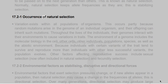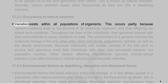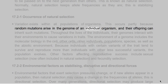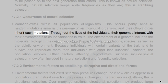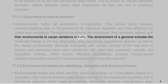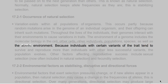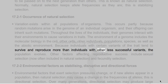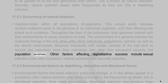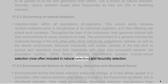Variation exists within all populations of organisms. This occurs partly because random mutations arise in the genome of an individual organism, and their offspring can inherit such mutations. Throughout the lives of individuals, their genomes interact with their environments to cause variations in traits. The environment includes molecular biology in the cell, other cells, other individuals, populations, species, and the abiotic environment. Because individuals with certain variants of the trait tend to survive and reproduce more, the population evolves. Other factors affecting reproductive success include sexual selection and fecundity selection.